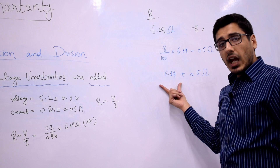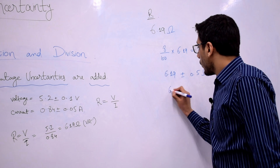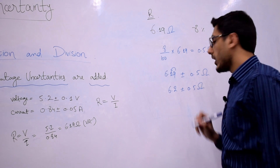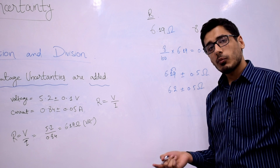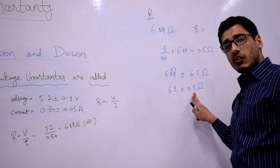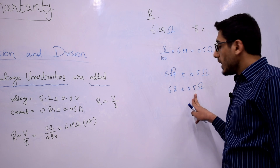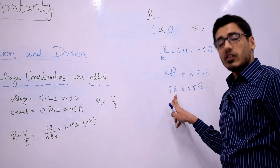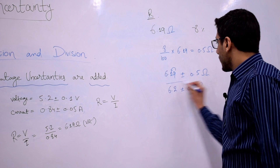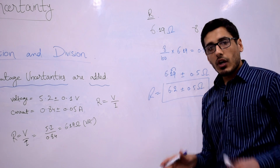The number of significant figures to maintain in the value of R is only 2, so my final result is rounded off to 6.2 ± 0.5 ohm. As I explained previously, the number of decimal places in your absolute uncertainty should equal the number of decimal places in your measurements. All conditions are satisfied and this is our final result for the value of R.